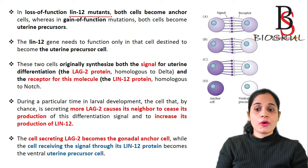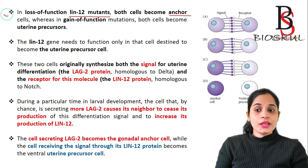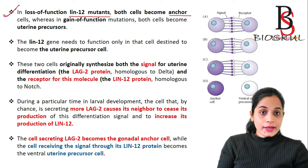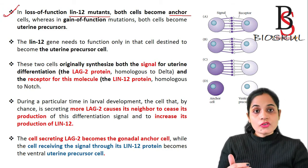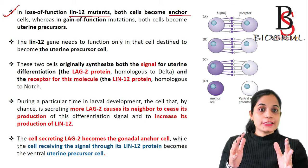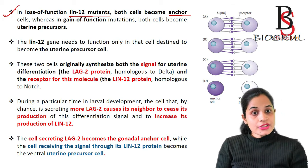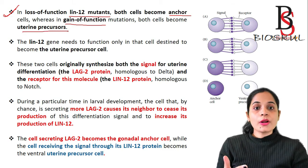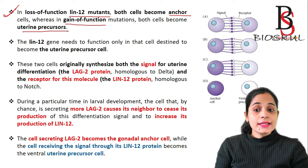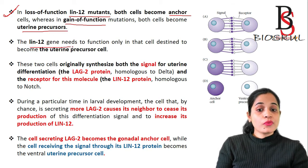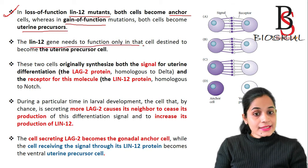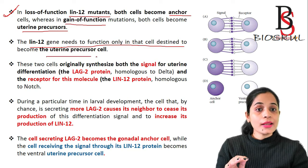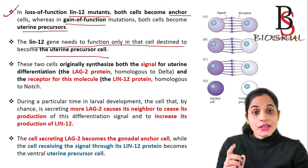If there is a loss of function of lin-12 mutant, then both adjacent cells will become the anchor cell. Whereas with a gain of function mutation of lin-12, both cells become uterine precursor cells. From this we conclude that the lin-12 gene is needed to function only in the cell destined to become the uterine precursor cell.